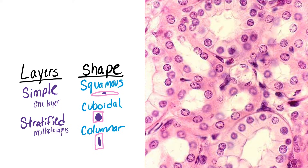To identify epithelia, all you need to do is look at the layers and look at the shape. Remember, epithelia is lining an open space, so you have to start from the open space and move away from it.